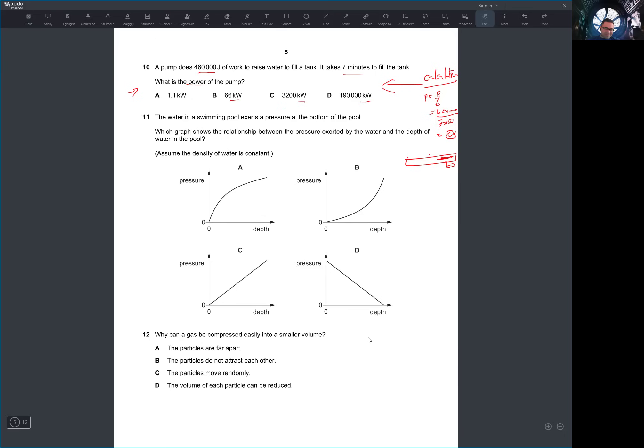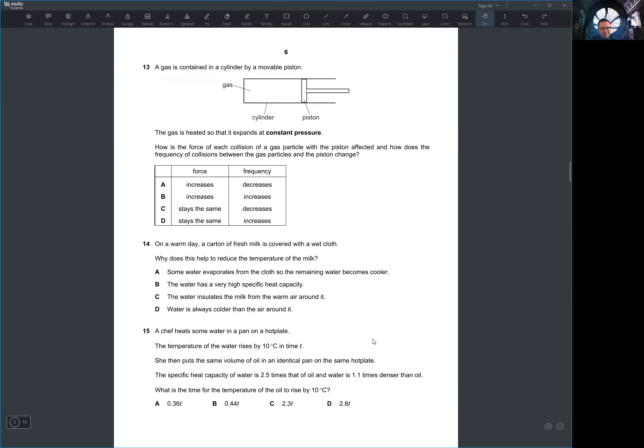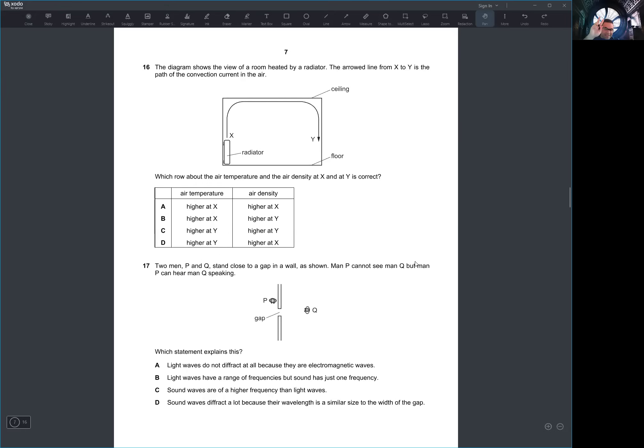You can answer 'Why can a gas be compressed easily into a smaller volume?' You go like, oh yeah, because gases molecules are far apart, they have weaker bonds. You can think of what the answer is, so when you look at the choices you know what to do. Like let's answer this: Why can a gas be compressed easily into a smaller volume? Oh yeah, they're far apart, that's why you can compress them. Okay. On a warm day, a carton of fresh milk is covered with a wet cloth, so why does this help reduce the temperature? Oh yeah, wet cloth, warm day, reduce the temperature - this is probably evaporation. Either you put the cloth, the water evaporates, temperature decreases. So that's the second type of question.